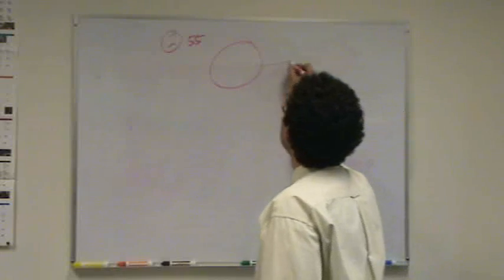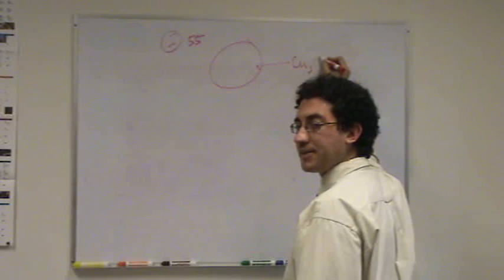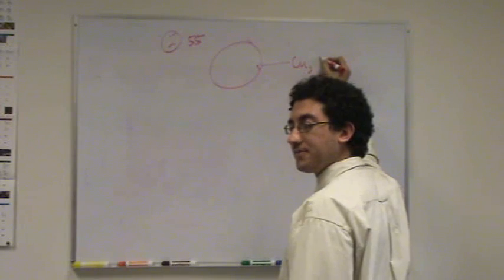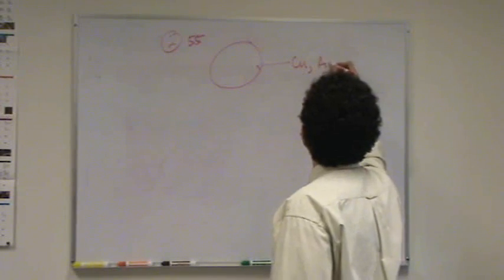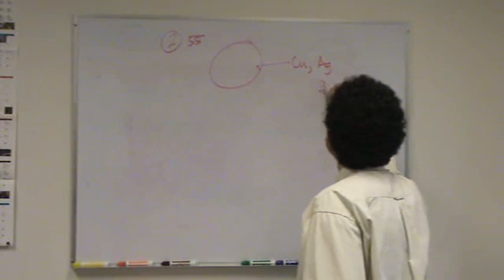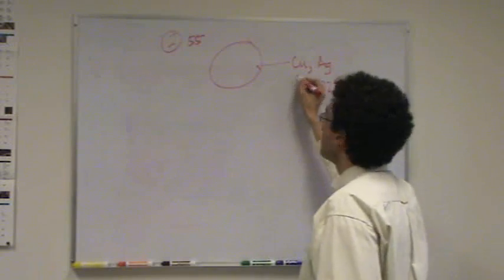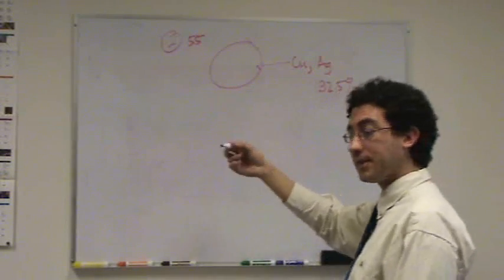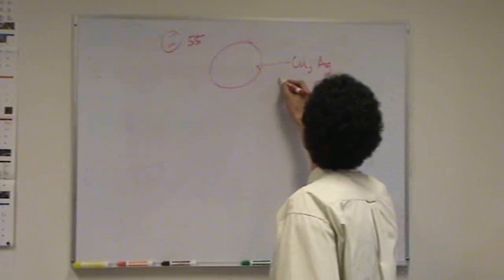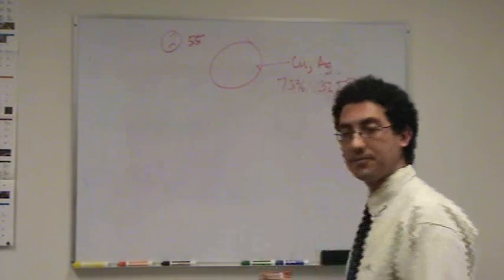So this is made of copper, right? And what else? It says silver. Copper and silver. And it says 92.5% silver. So just by subtracting from 100, if there's nothing else there, that would make 7.5% copper.